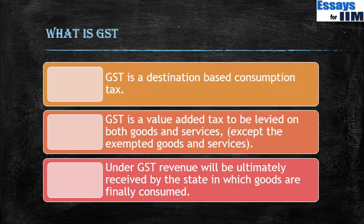What is GST? GST is a destination-based consumption tax. Earlier, with the interstate CST, goods originating from Gujarat going to Uttar Pradesh had the tax retained by Gujarat — that was an origin-based tax. Under GST, it is a destination-based tax: goods are taxed in the state of final destination. It is also a consumption tax — taxation on consumption. GST is a value added tax levied on both goods and services, except exempted ones. GST revenue will ultimately be received by the state in which goods are finally consumed.